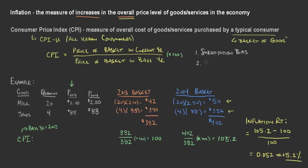The introduction of new goods happens all the time, especially in technology, and it's one of the things that can be difficult to capture in the CPI. That variety increases your options and increases your well-being. One example would be the iPhone in 2007 — before that we had cell phones, but the iPhone was an addition of a new type of good giving consumers extra options: computing availability and the ability to surf the internet.